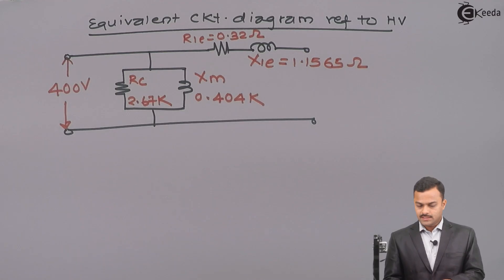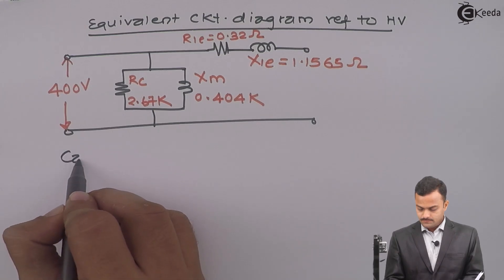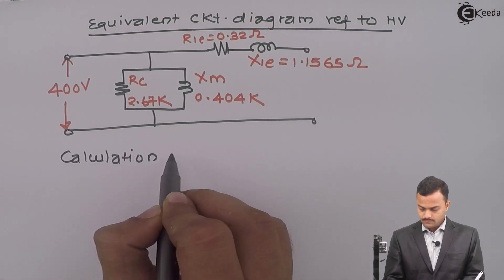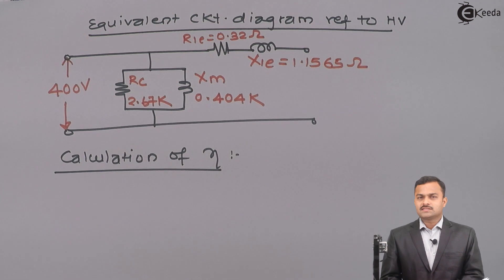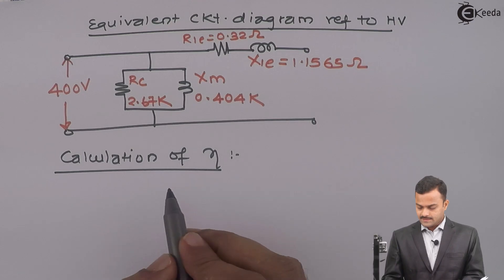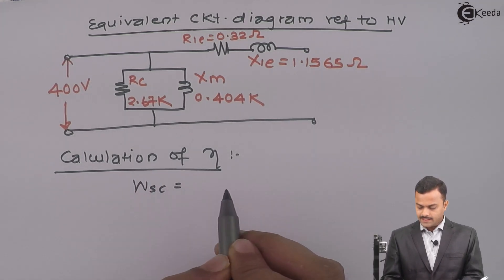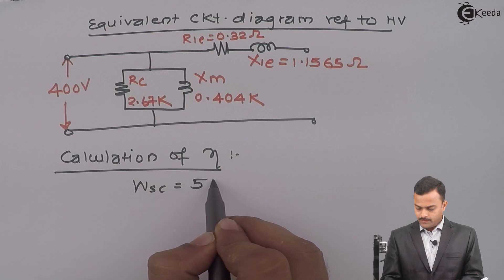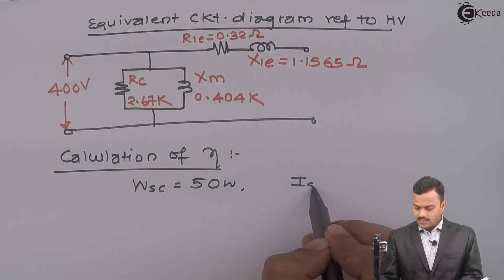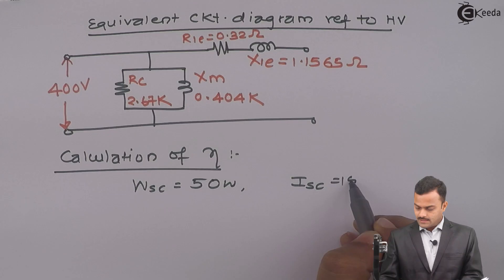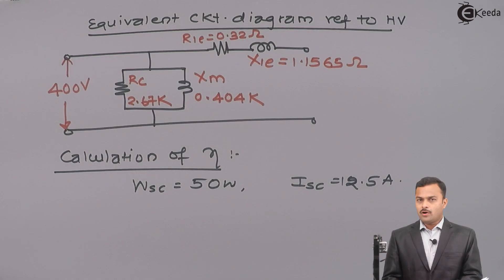Let us proceed further now for efficiency. So, second part is calculating efficiency. For that purpose, I should know full load copper loss. So, what they have given is this WSC we are getting 50 Watt when current ISC is 12.5 ampere. Now, we are performing this test on high voltage side and high voltage is the primary.